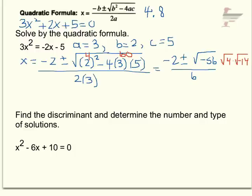So I know the square root of 4 is 2. So coming down here, I have negative 2 plus or minus 2i, because it's a negative square root, square root of 14, all over 6.